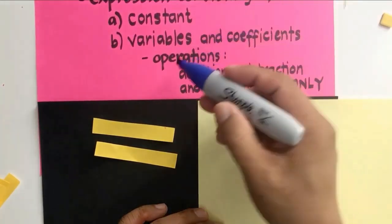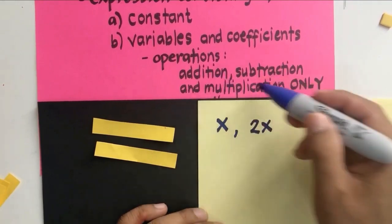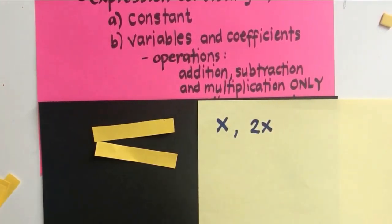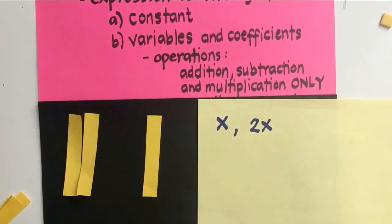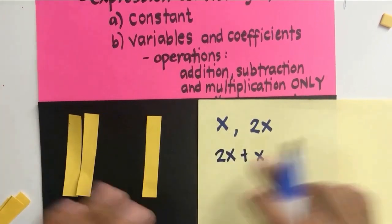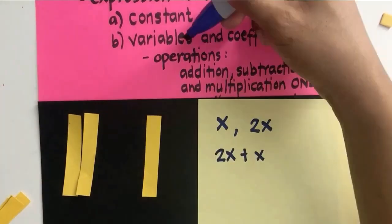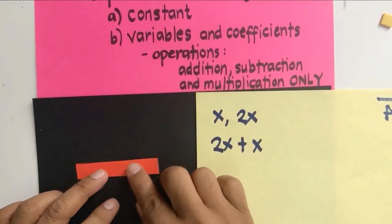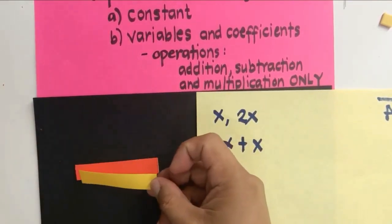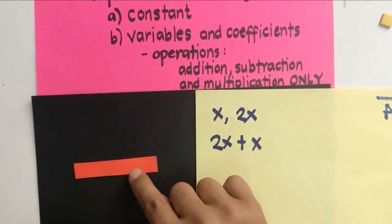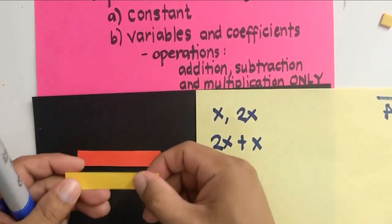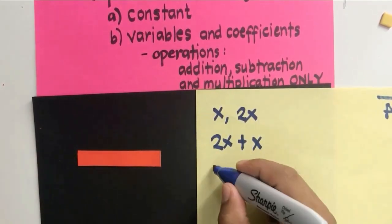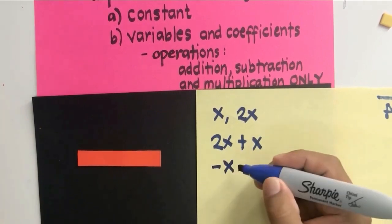Polynomials can involve variables and coefficients in operations of addition, subtraction, and multiplication. We can add variables: 2x plus x is also a polynomial. We can also have negative x — represented by the same shape but in red — which is also a polynomial.